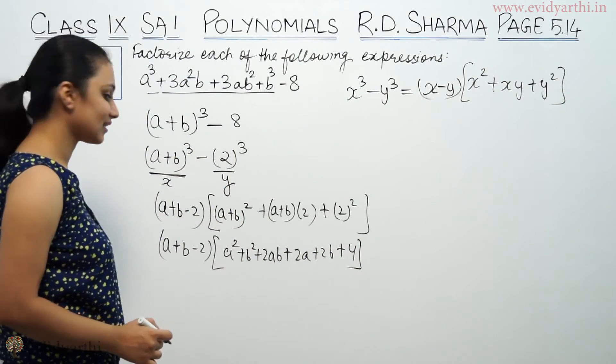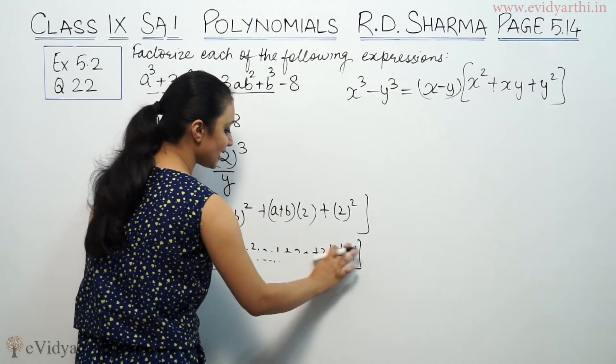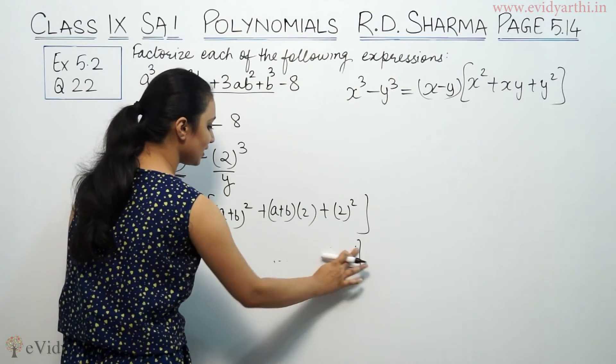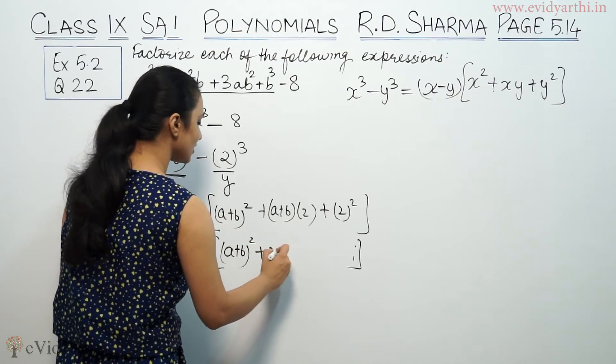Now, you can write these as a² + 2ab + b² + 2a + 2b + 4. You can write this out, but this is not required.